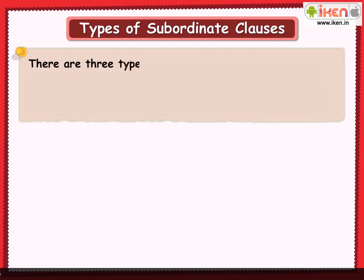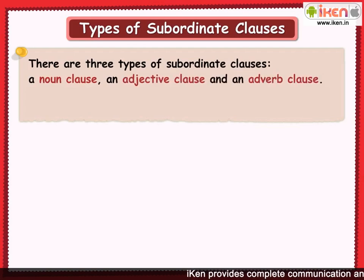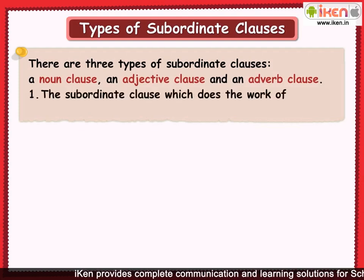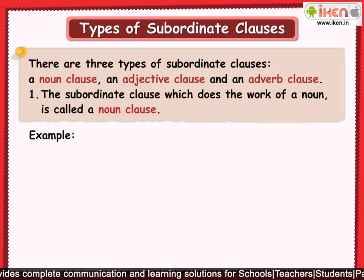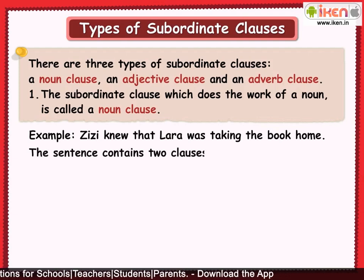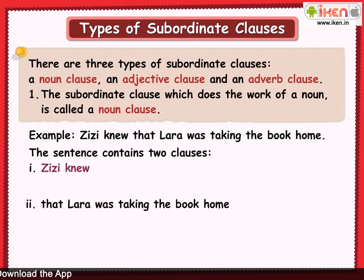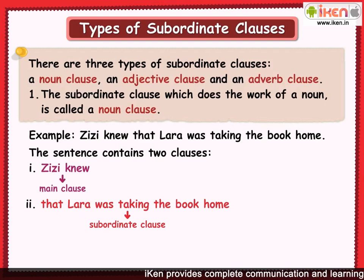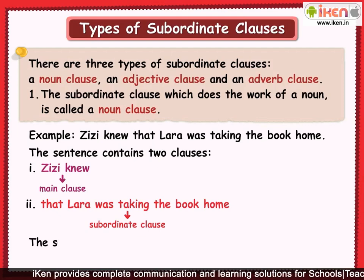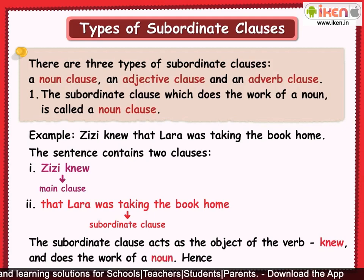There are three types of subordinate clauses: a noun clause, an adjective clause, and an adverb clause. The subordinate clause which does the work of a noun is called a noun clause. For example: 'Zizi knew that Lara was taking the book home.' This sentence has two clauses: 'Zizi knew' and 'that Lara was taking the book home.' The second clause acts as the object of the verb 'knew' and does the work of a noun — hence it is a noun clause.